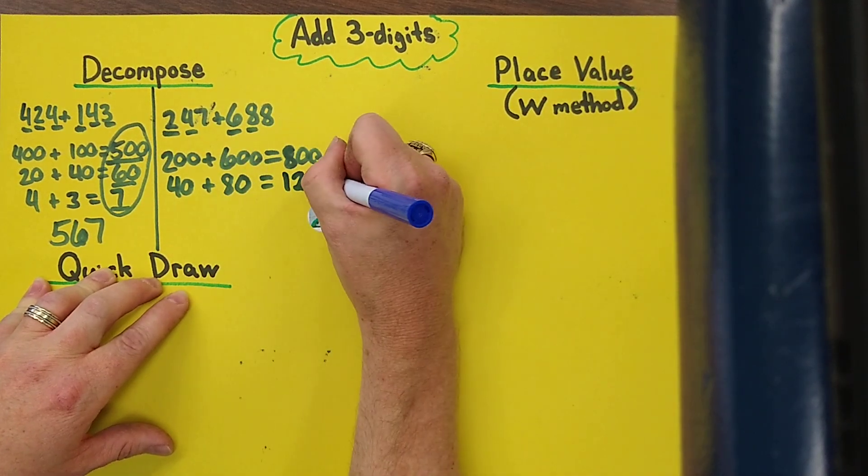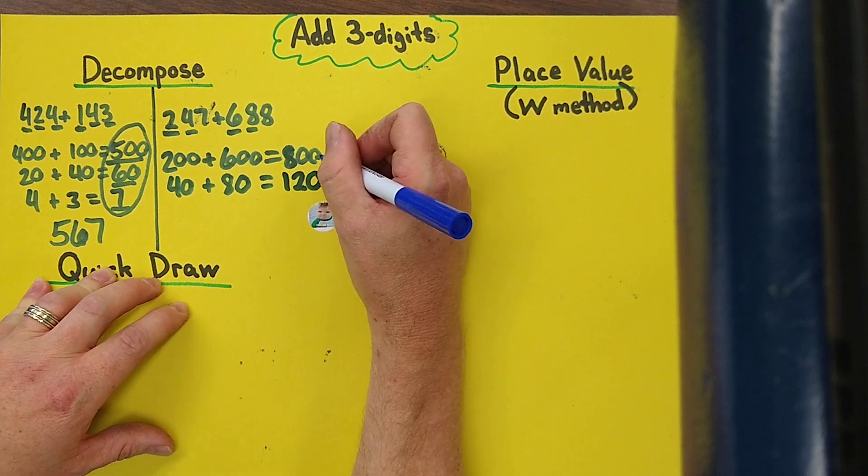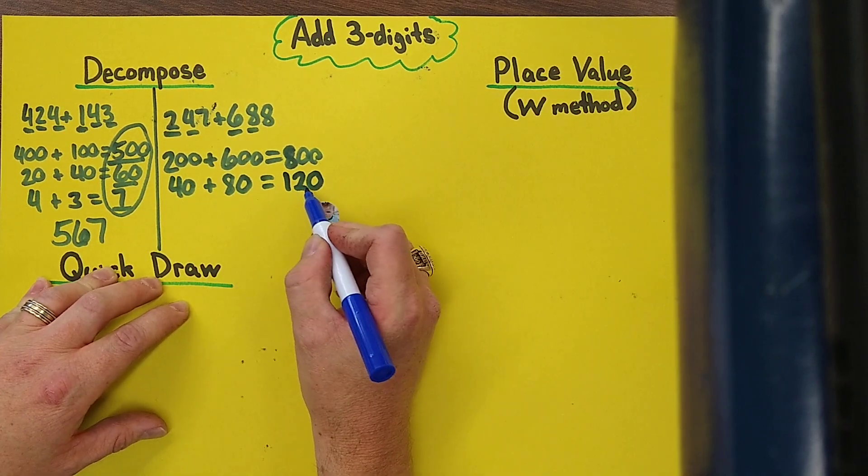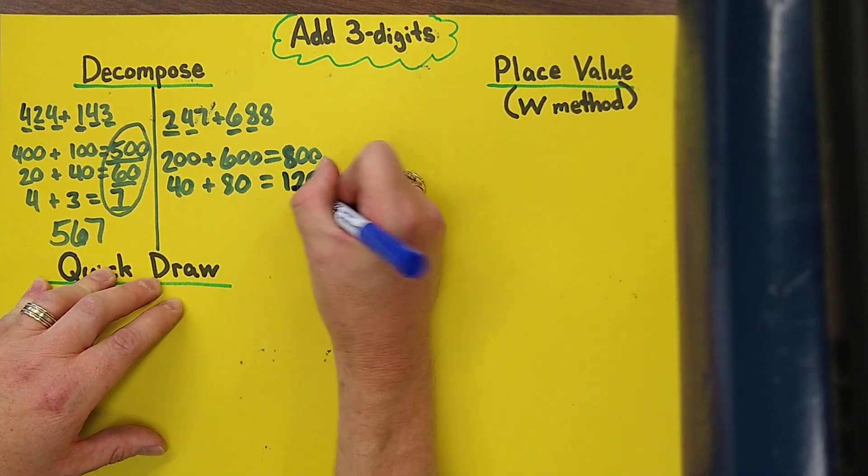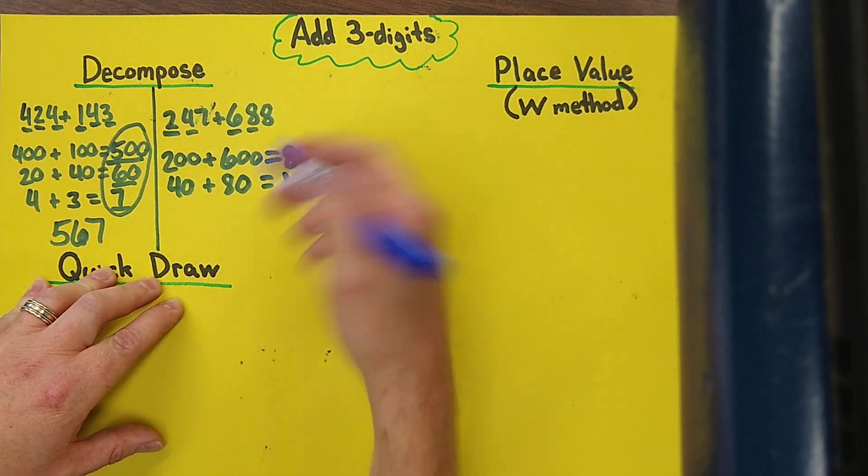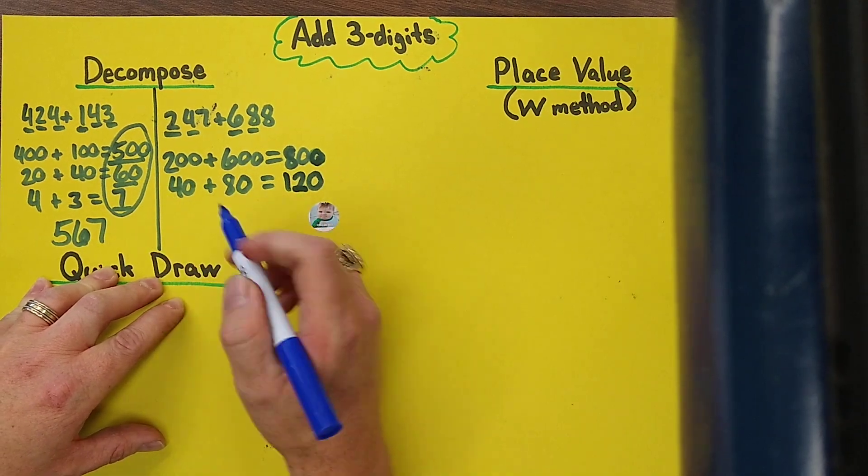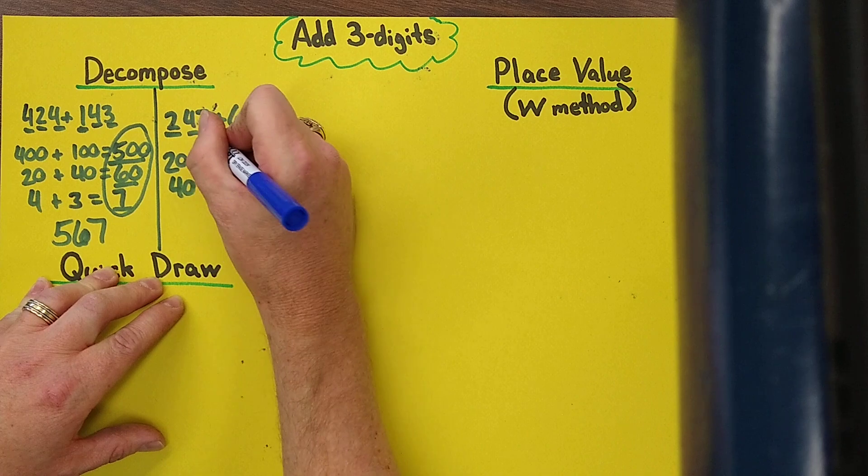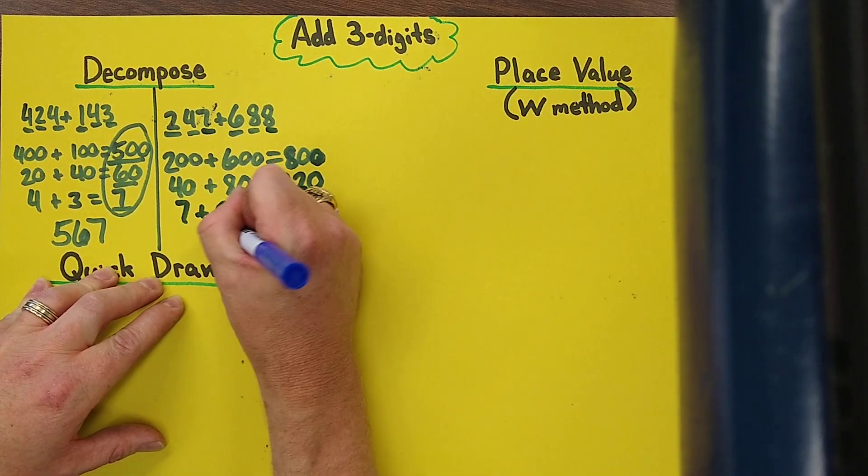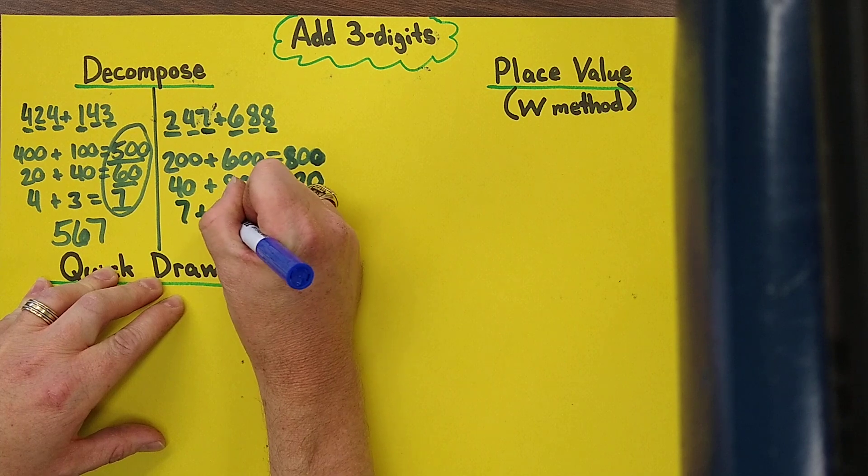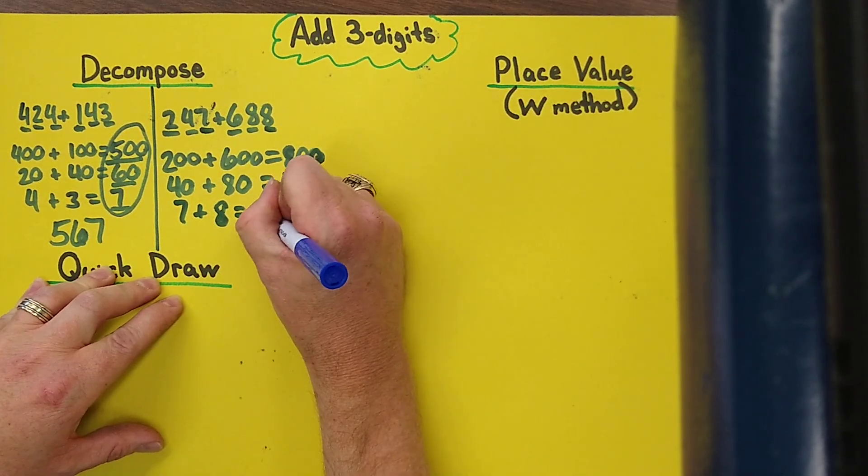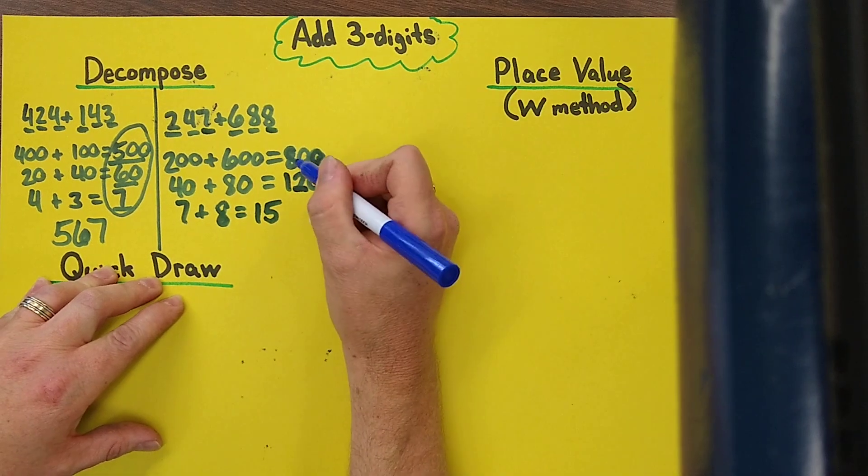Now put the zero back on, don't forget that step, very important because 40 plus 80 wouldn't give you 12 if you stop and think about it. So it needs to make sense, every move you make has to make some sense otherwise you don't really understand what you're doing. Now with our ones place we have 7 plus 8, and if you know your double facts, 7 and 7 is 14, 8 is one more so that's going to give you 15.